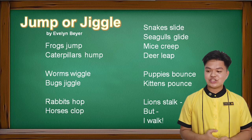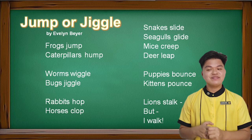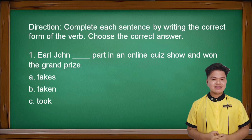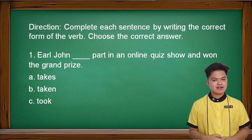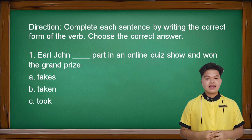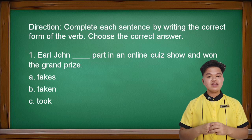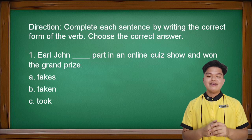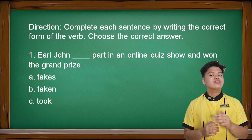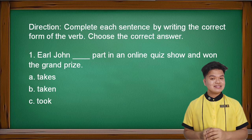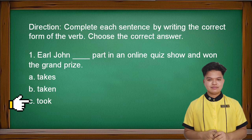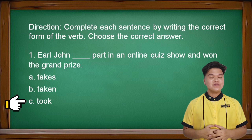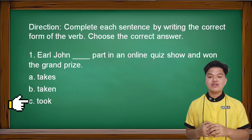You will hand me your papers later. Are you ready for the next activity? Let's proceed. Complete each sentence by writing the correct form of the verb. Number one: Earl John blank part in an online quiz show and won the grand prize. A: takes, B: taken, or C: took. The answer is 'took' because it already happened and Earl John already won the grand prize.